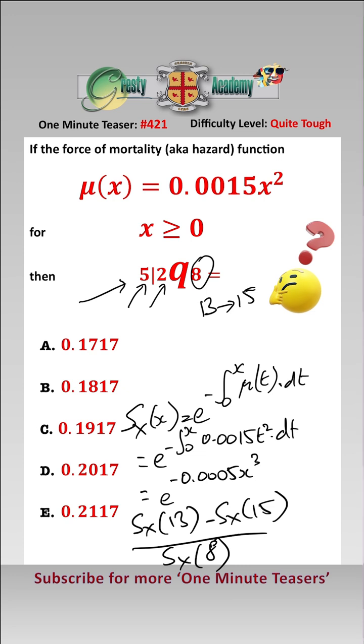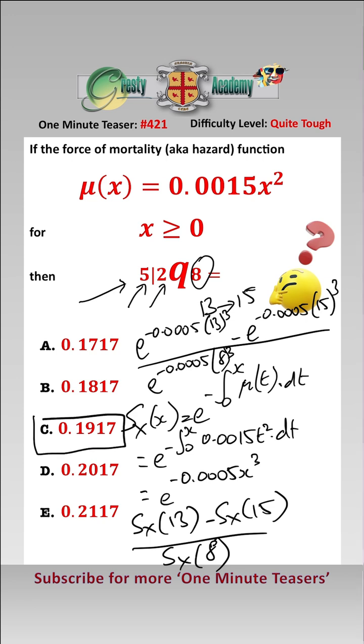Putting that in gives us e to the minus 0.0005 times 13³ minus e to the minus 0.0005 times 15³, over e to the minus 0.0005 times 8³. When we work that out on the calculator, we get 0.1917, which is answer C.